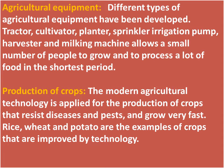Agricultural equipment: Different types of agricultural equipment have been developed — tractor, cultivator, planter, sprinkler, irrigation pump, harvester, and milking machine. These allow a small number of people to grow and process a lot of food in the shortest period of time.